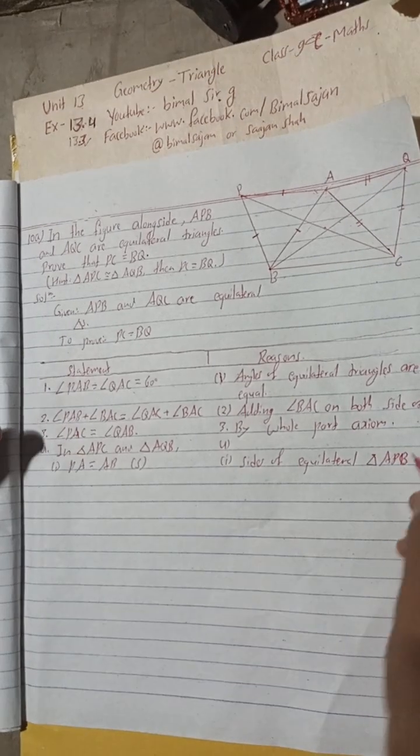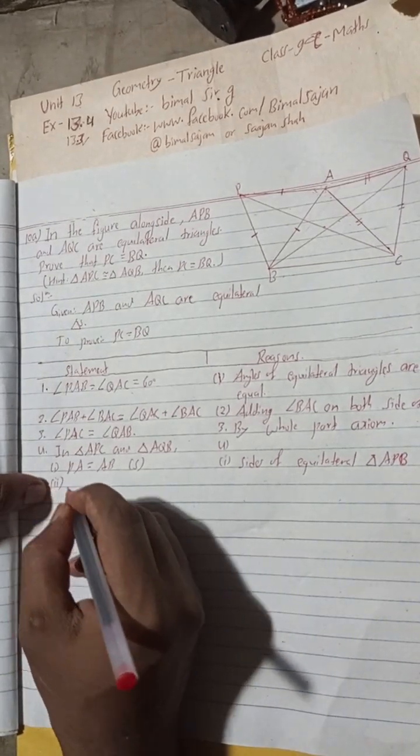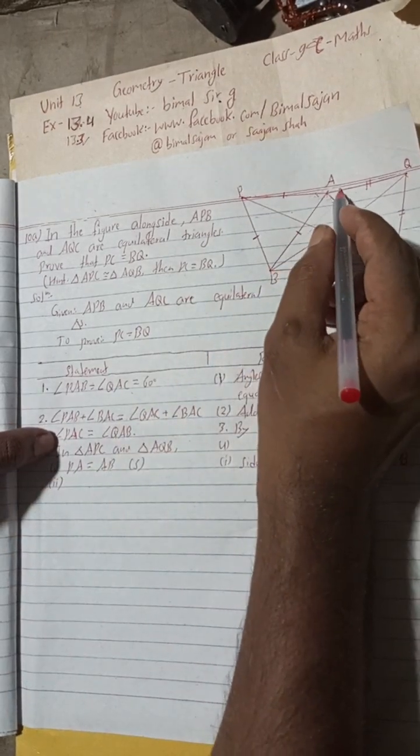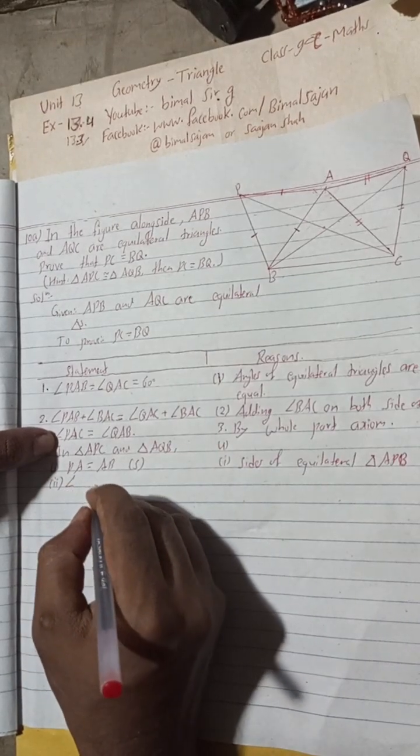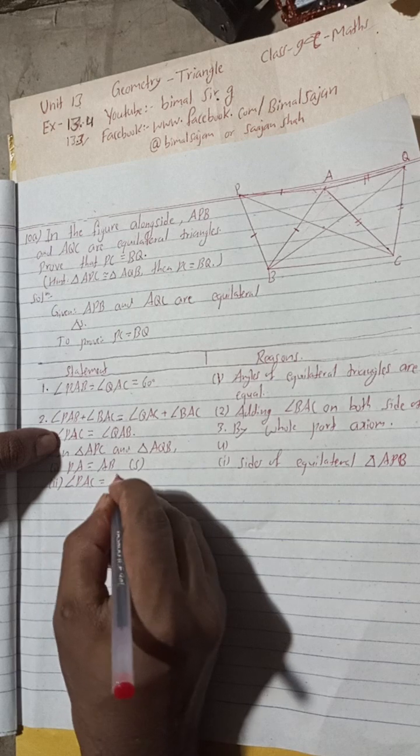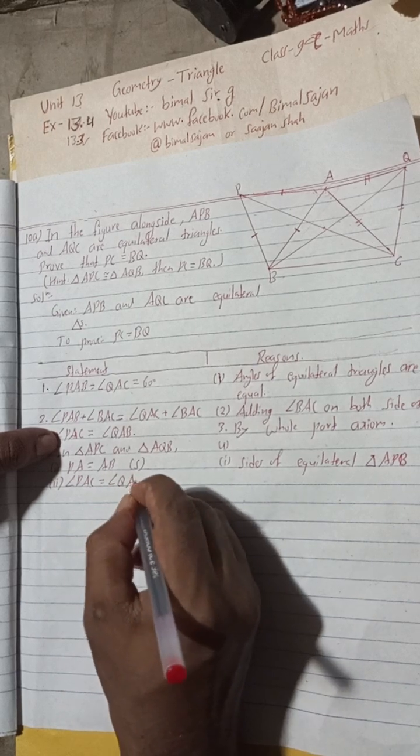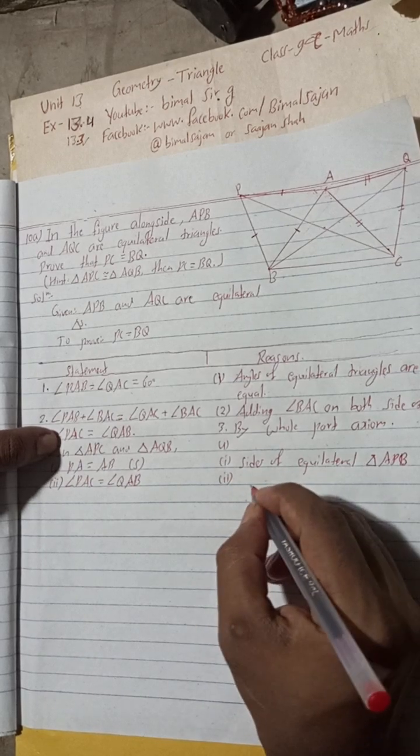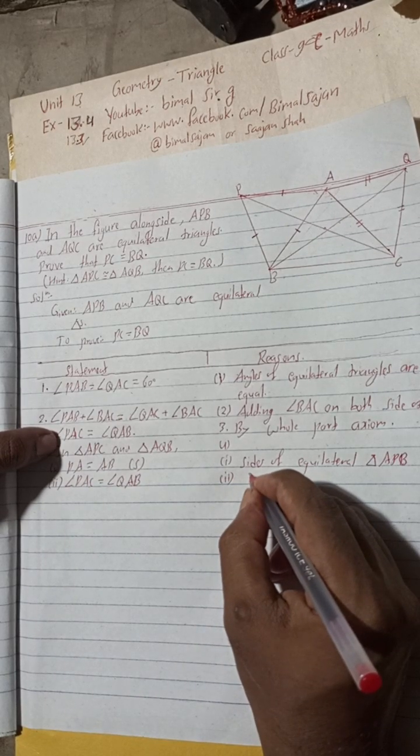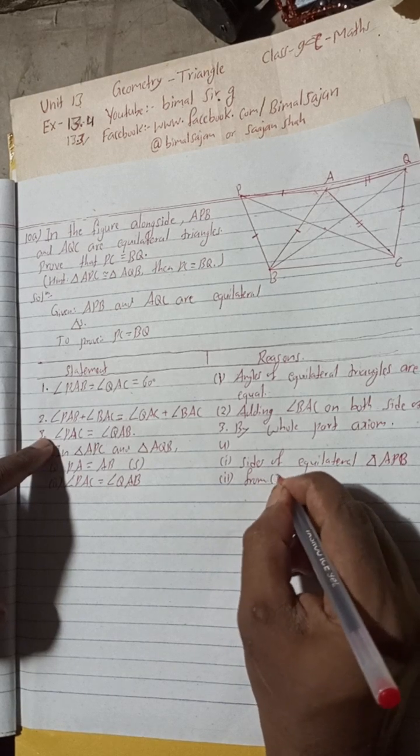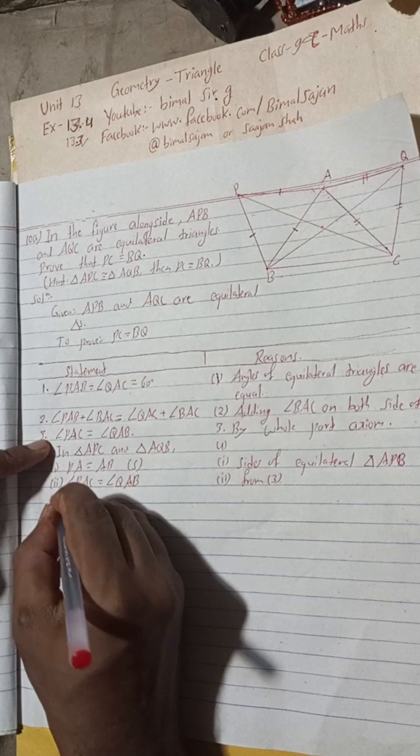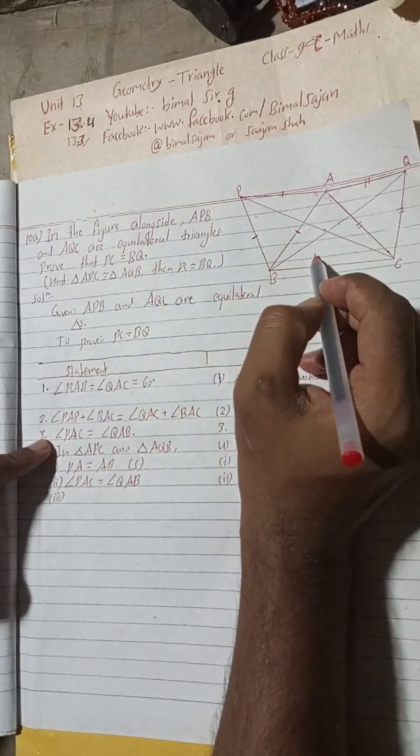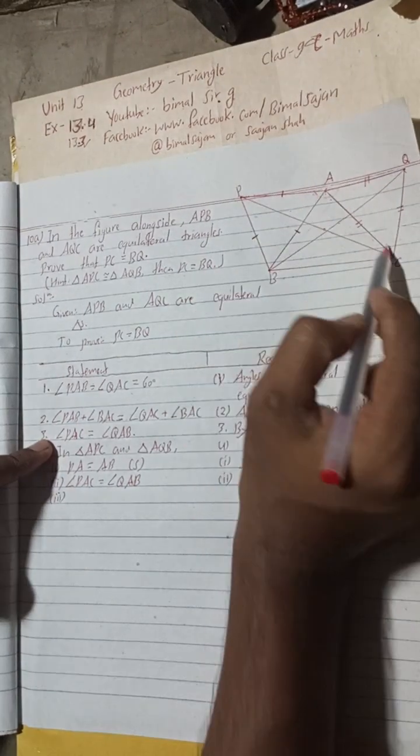Now, number two for the triangles: This angle we can take - angle PAC is equal to angle QAB. So this is given from statement three.